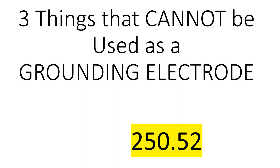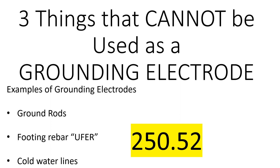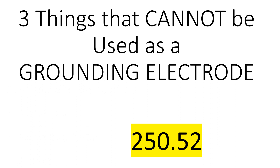We're talking about grounding electrodes themselves. Some examples are ground rods, or maybe your concrete encased electrode — your footing rebar, which we call an Ufer ground — or cold water lines. These are just some of the examples of grounding electrodes that you are allowed to use in the NEC. Today we're going to cover the three that you're not allowed to use.